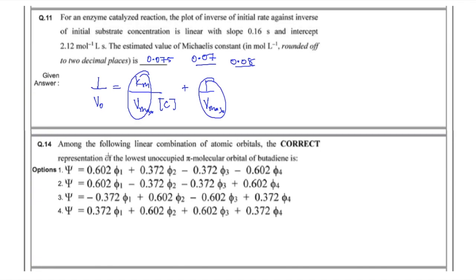The next question asked which linear combination of atomic orbitals represents the lowest unoccupied pi molecular orbital of butadiene. Butadiene has four molecular orbitals: ψ₁, ψ₂, ψ₃, and ψ₄. With four electrons, the LUMO is ψ₃, which has two nodes. The answer was option number two — a very easy question that I have solved many times in my videos.